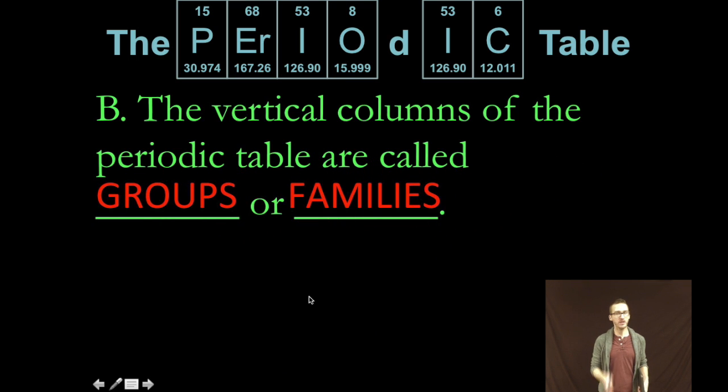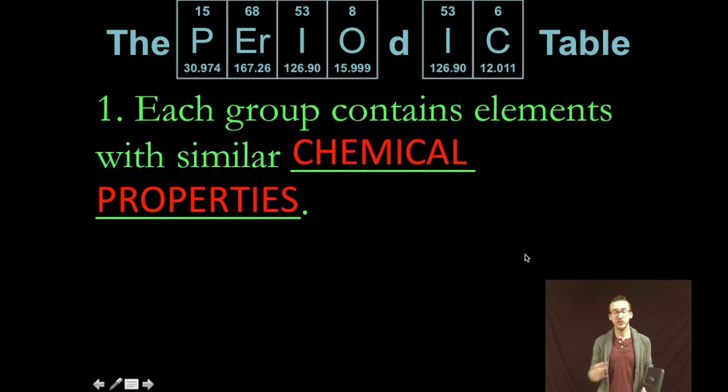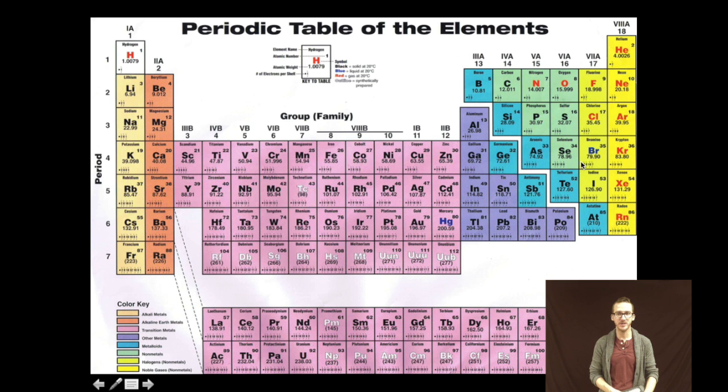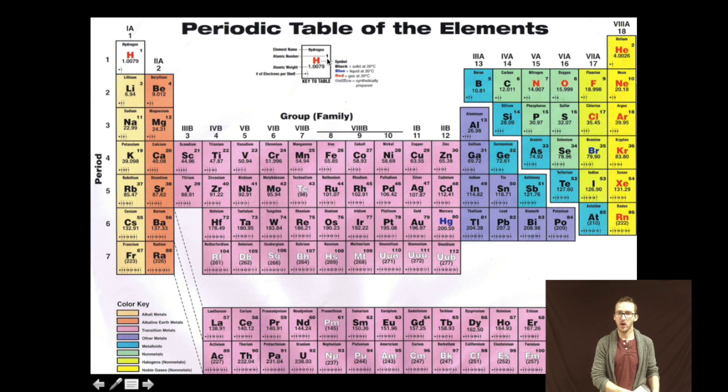Additionally it's important to note that the vertical columns up and down on the periodic table are called groups or families. Now just like groups that you hang out with or your family, elements that are in the same vertical column or group have similar properties. So for example the elements in group 7 all behave similarly. In group 8 they behave like one another. Additionally you need to be aware that the horizontal rows across are also known as periods. And if you recall those periods or rows also represent main energy levels in the electron cloud.